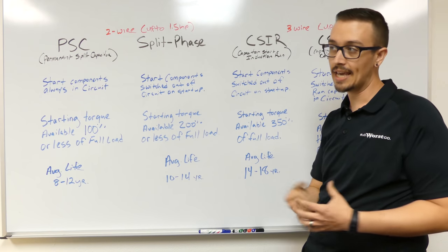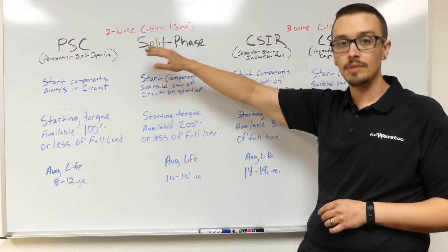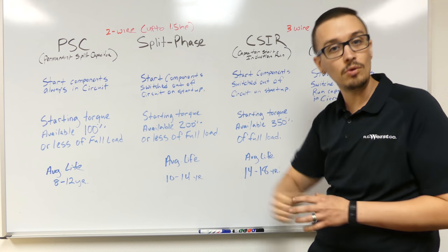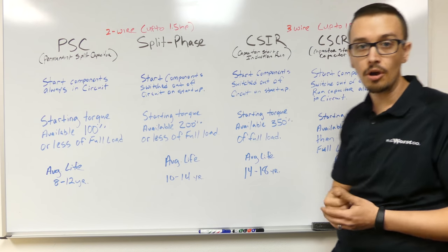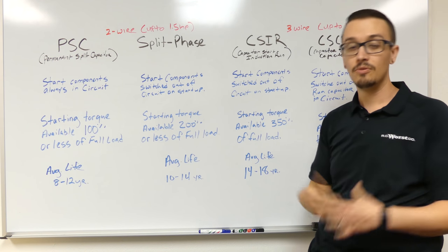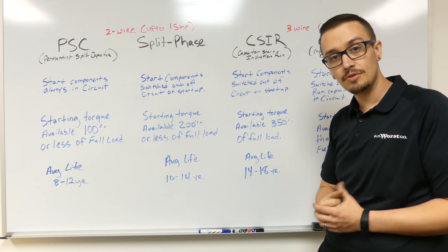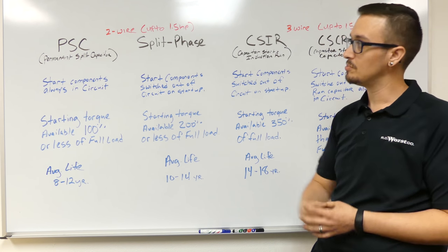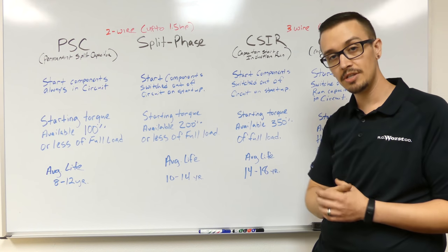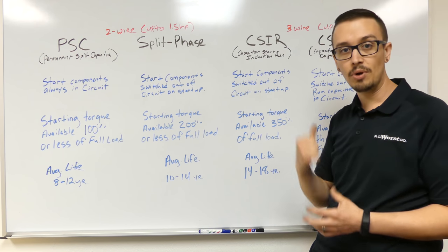The notable differences right out the gate is two wire are limited to up to one and a half horsepower. Three wire, you can go up to 15 horsepower before you're having to go with a three phase. So let's focus on two wire for just a minute, talk about some of the differences between PSC and split phase motors, and then we'll jump right into three wire.